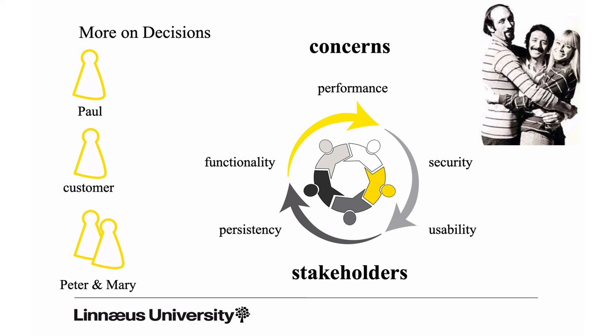Paul is interested in what Peter and Mary do, but not the details of the implementations of their subsystems. Each of the stakeholders has an interest in one or more concerns. Here are just five different concerns — there are many more — but performance, functionality, security, persistency, and usability are just a couple of examples of concerns. These could be a concern to Paul, to Peter and Mary, or to the customer. Functionality, for instance, is something that Paul, the customer, and Peter and Mary are all interested in.